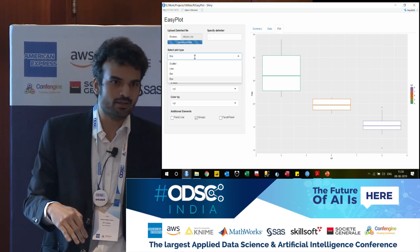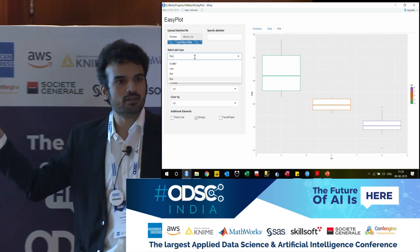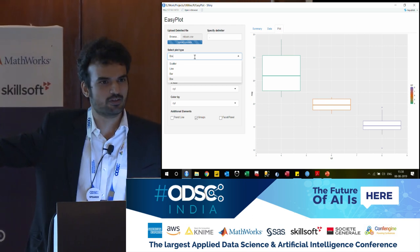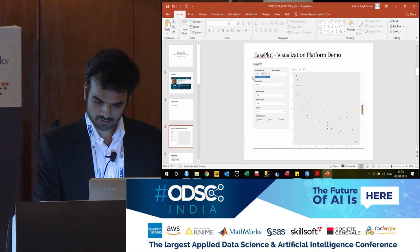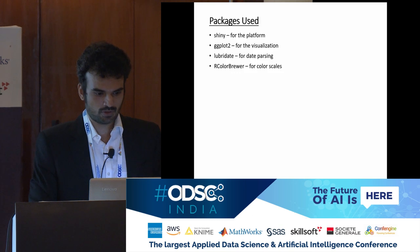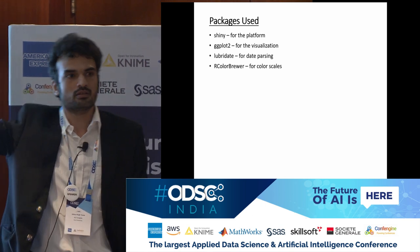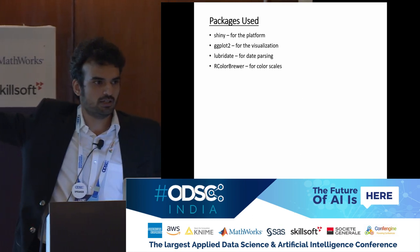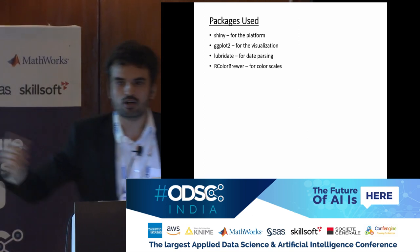What we are going to do today is I am making this public and I am making the code public as well. You can go back and play around with it and we can probably collaborate and see where we can take this. This can be a full-fledged thing; this is a very basic version at this point. The packages used are: Shiny for the app development platform, ggplot2 for the plots, lubridate for date parsing, and the last one is only for color scales.